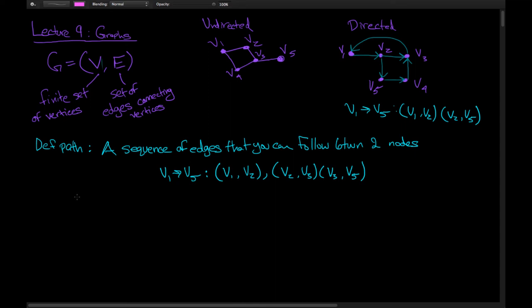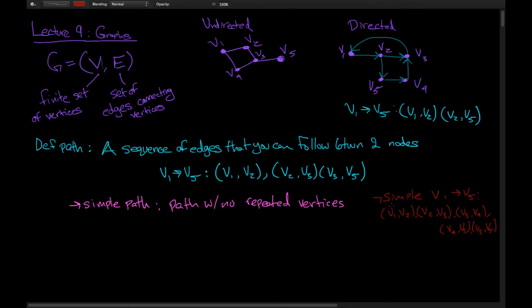There are a couple of subtypes of a path. One is a simple path, which is a path with no repeated vertices — you never visit the same vertex twice. This right here is a simple path. An example of a path that's not simple between V1 and V5 would be V1 to V2, V2 to V3, V3 to V4, V4 back to V3 — we've repeated vertex V3 — and then to V5.